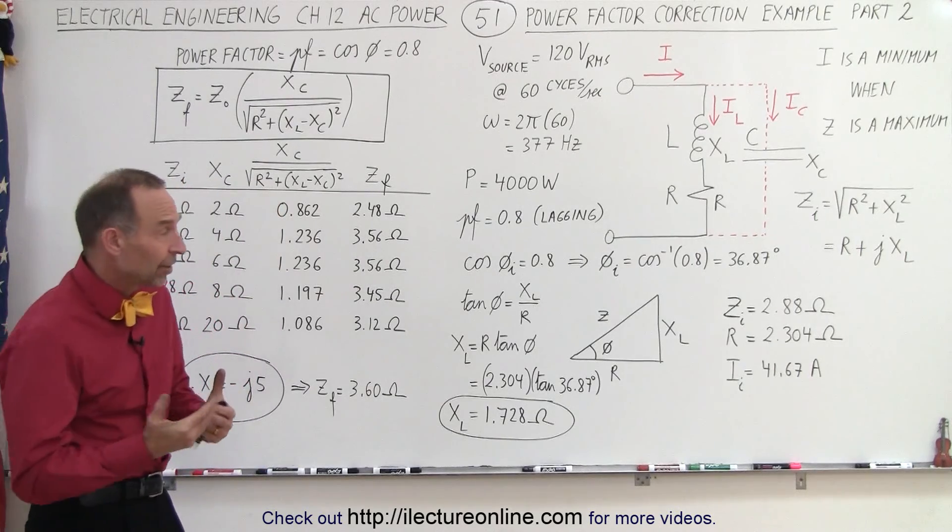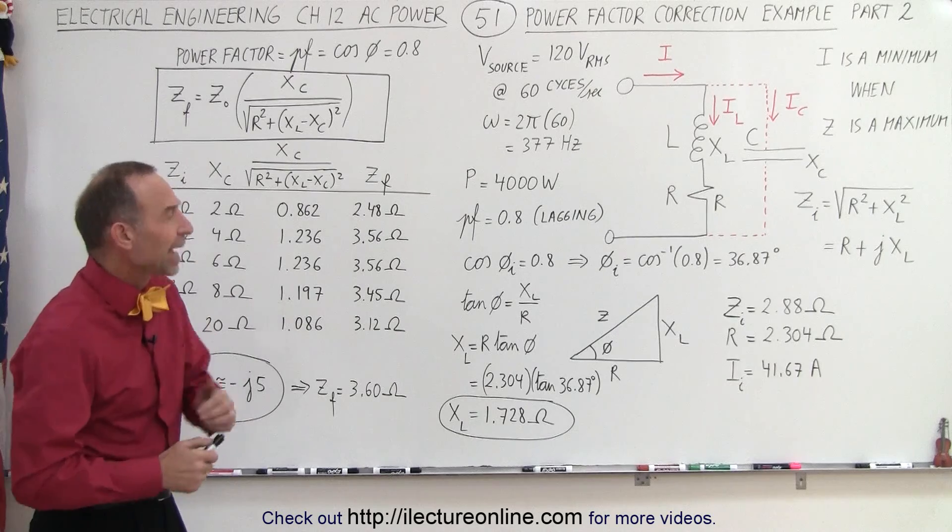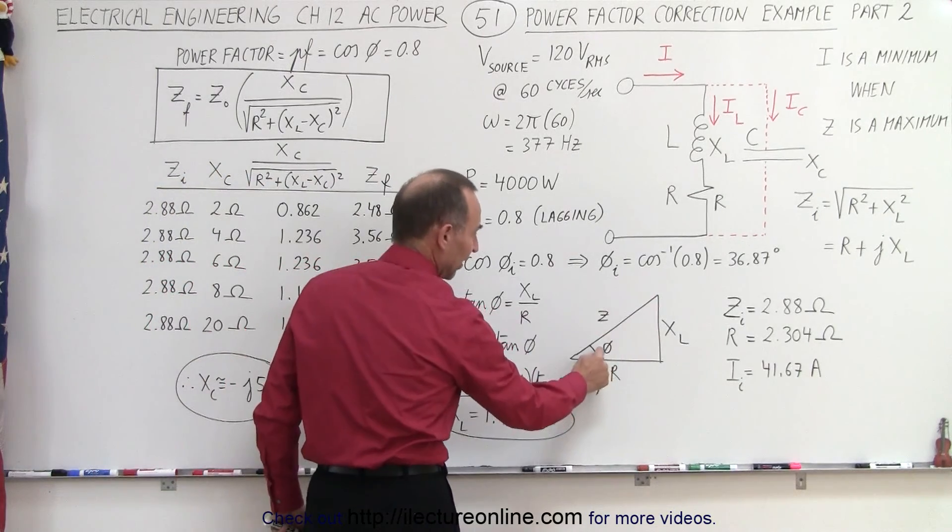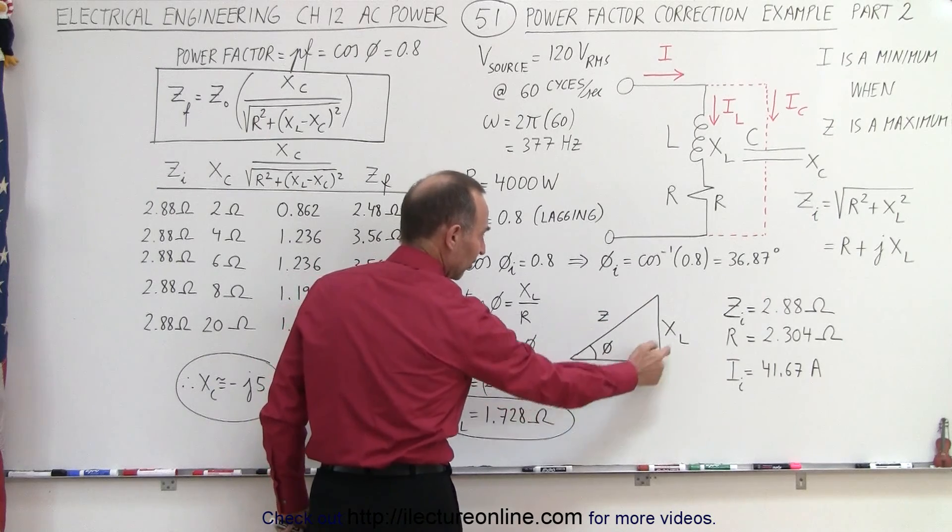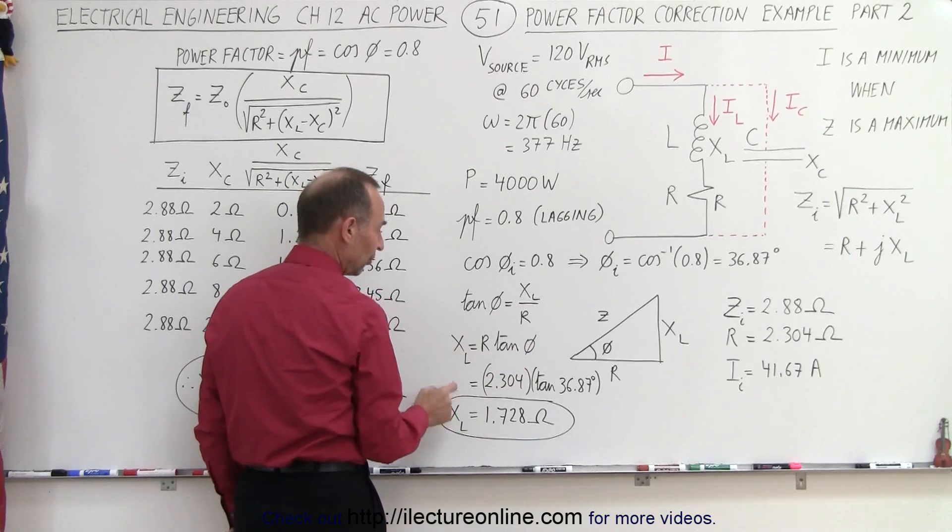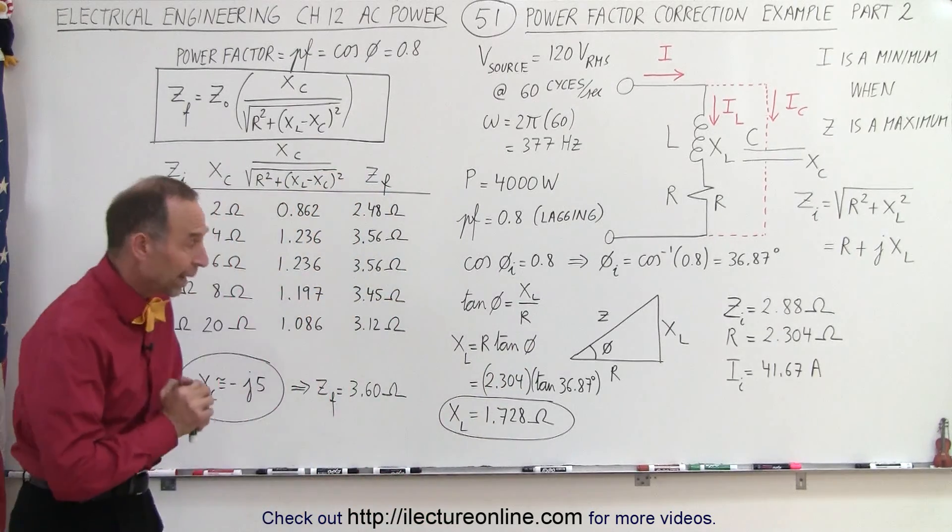We also need to calculate the inductive reactance, and so we can then set up our triangle. We have the phase angle, the impedance, and the resistance, so we can see that the tangent of the phase angle is the inductive reactance over the resistance. Therefore the inductive reactance can be calculated to be 1.728 ohms.